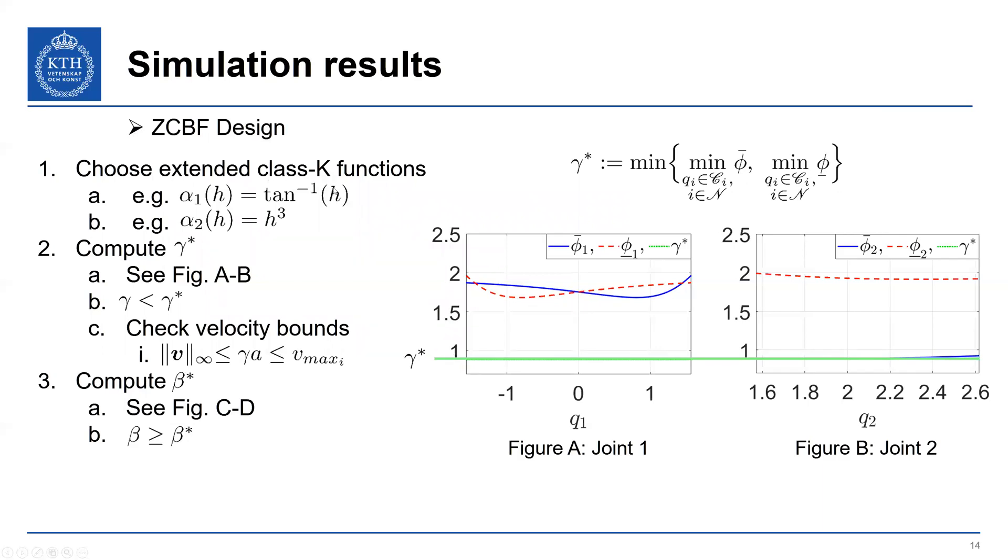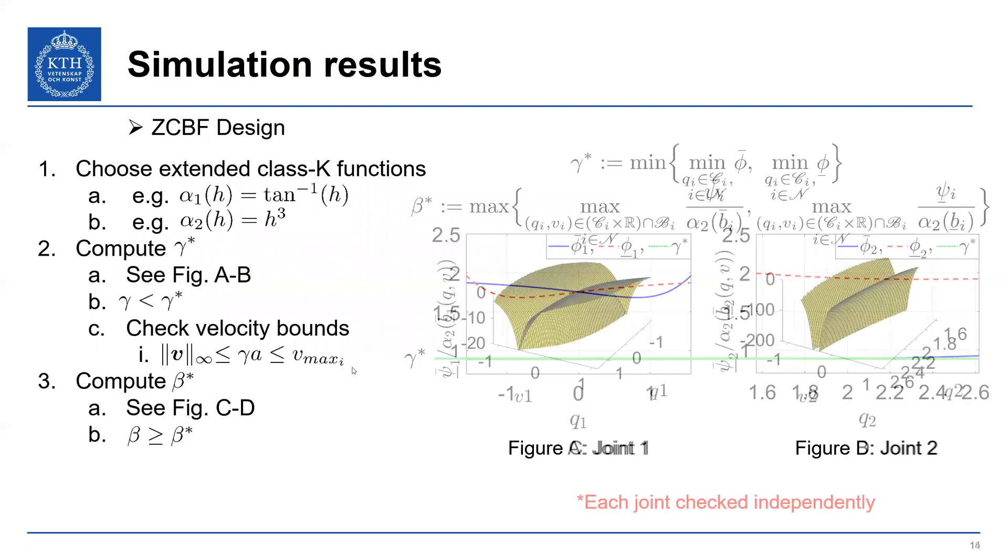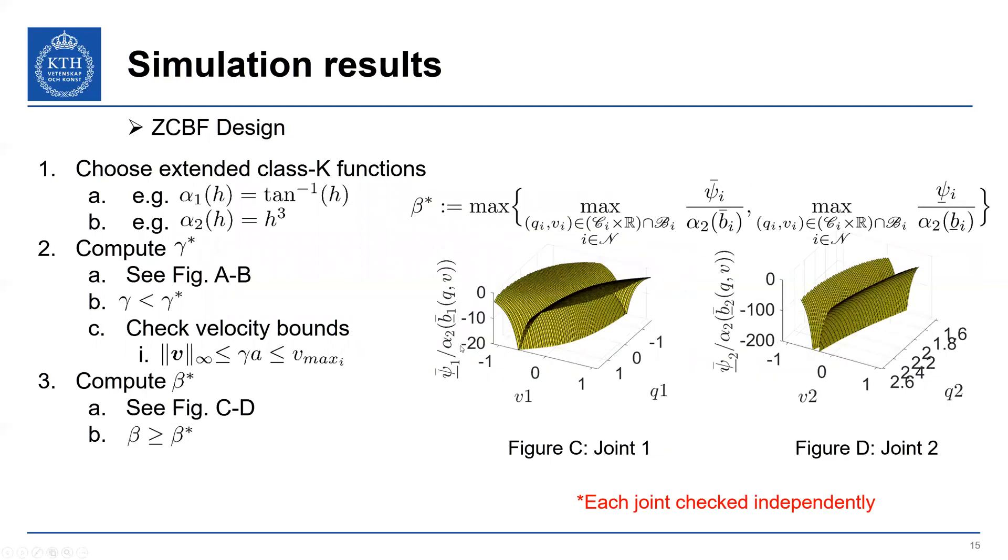We have a design approach. So we first have to choose these extended class K functions. Here, for example, we have the arc tangent of H for alpha_1 and the cubic function for alpha_2. Given this, we then can compute our design parameters. So we plot the functions phi bar and lower bar here. We can find a lower bar of gamma star. So we choose gamma less than gamma star. We then check the velocity bounds of the system. Indeed, the maximum velocity is satisfied. And then we can go to the beta star computation.